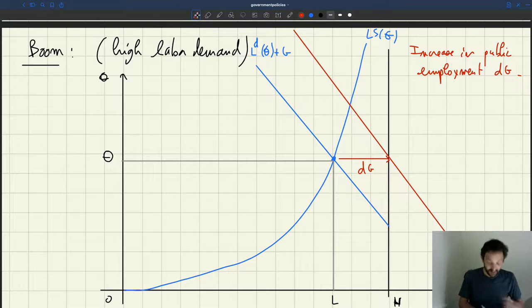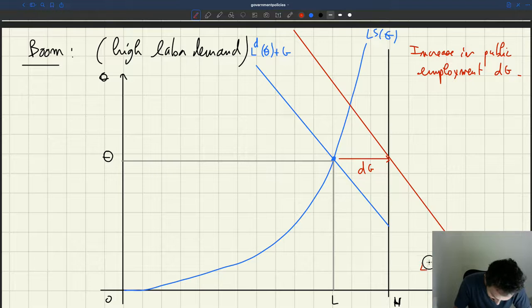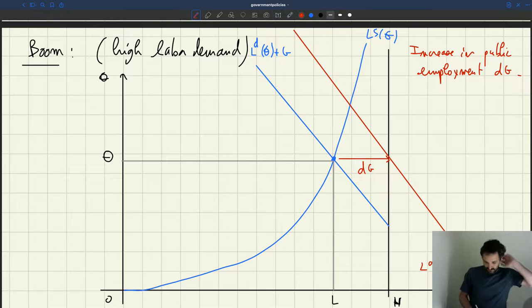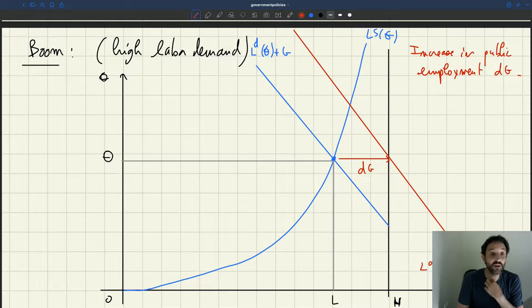Okay. So the labor demand now moves like this. So this is D of theta plus G plus DG. As per usual. Okay. But what we see now is that because the labor supply is so steep, the increase in tightness is actually quite large in equilibrium.